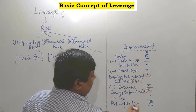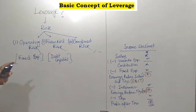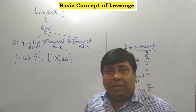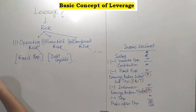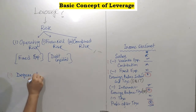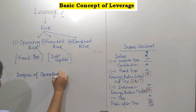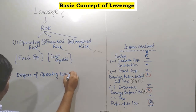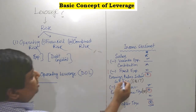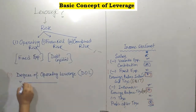Now, how is such an income statement related to leverage? How do we measure operating risk, financial risk, and combined risk? Operating risk can be measured as degree of operating leverage, in short known as DOL. The formula of operating leverage is: contribution divided by EBIT, or Contribution / EBIT.